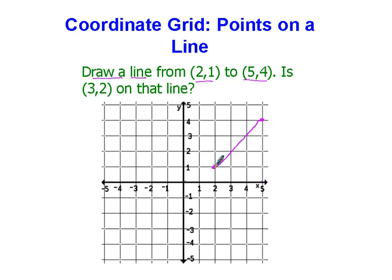And then it says is (3,2) on that line. Here's the next part that so many kids forget. You must put that point on your graph somewhere. Whether or not it's on the line, it still has to be there. So we're going to go over to 3. Here's 3 right here. Up 2 and put a point right there.